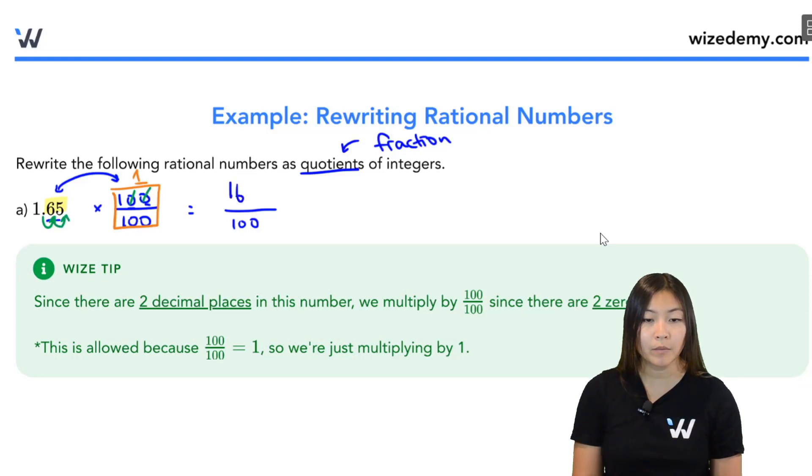So now, my answer in the top is just 165. So this is a quotient of integers. That's it. That's a rational number.